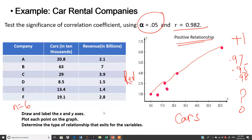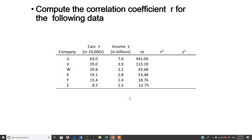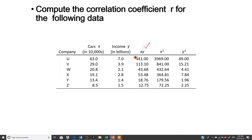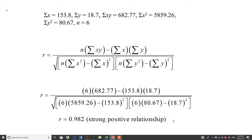To find r = 0.982, the X values and Y values are given. You multiply those two columns to get XY, square the X column and the Y column, and then take the total of each column. Put those figures into the formula, and you get r = 0.982, confirming a strong positive relationship between cards and revenue.